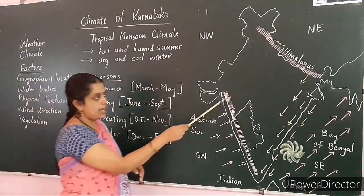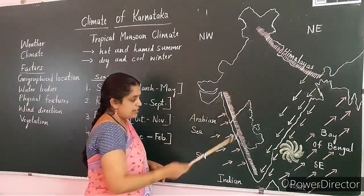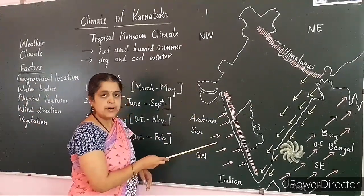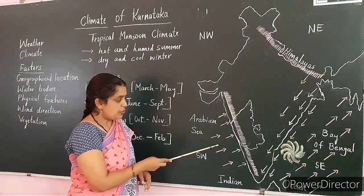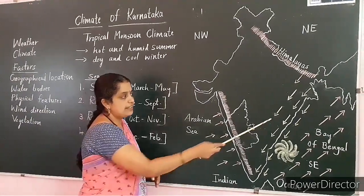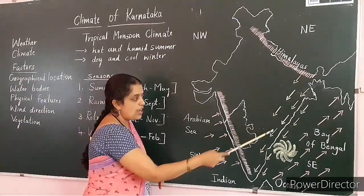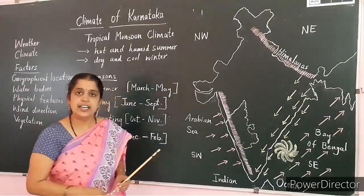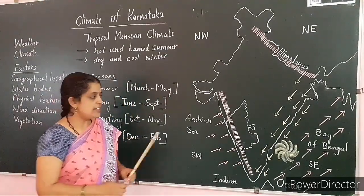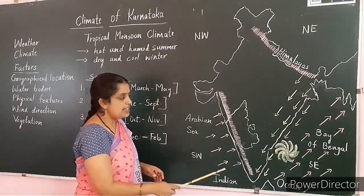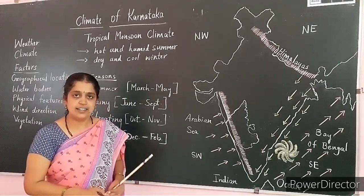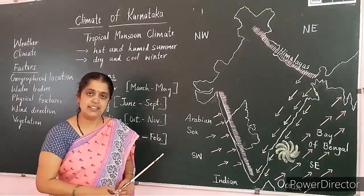Here is the map. The red arrow marks show the south-west monsoons, and the yellow arrow marks show the retreating monsoons. Please observe these markings carefully and understand the lesson.